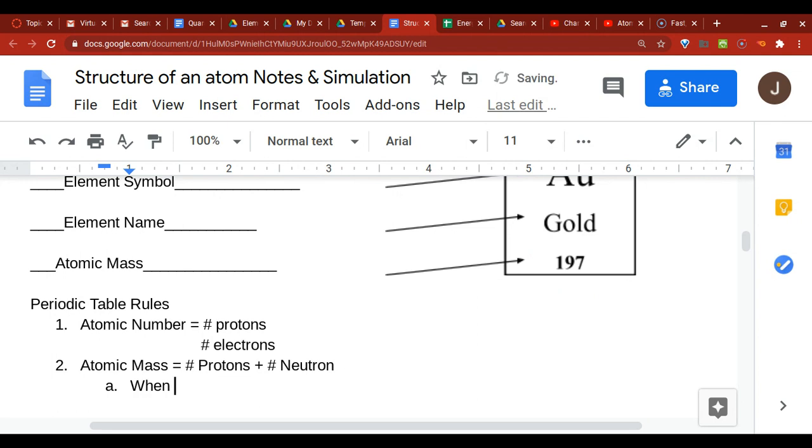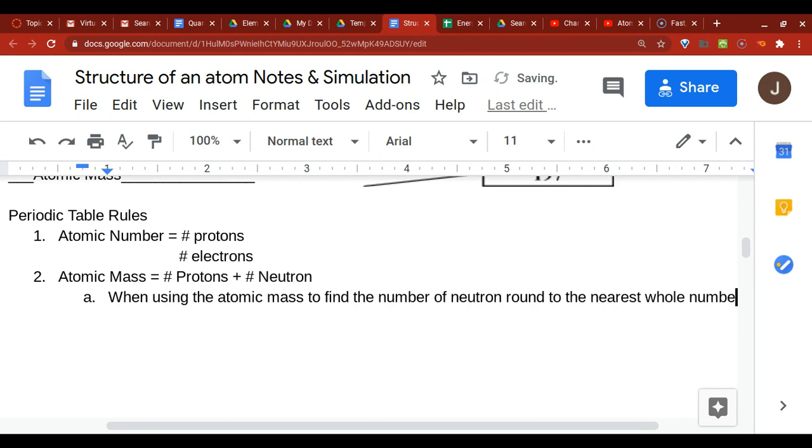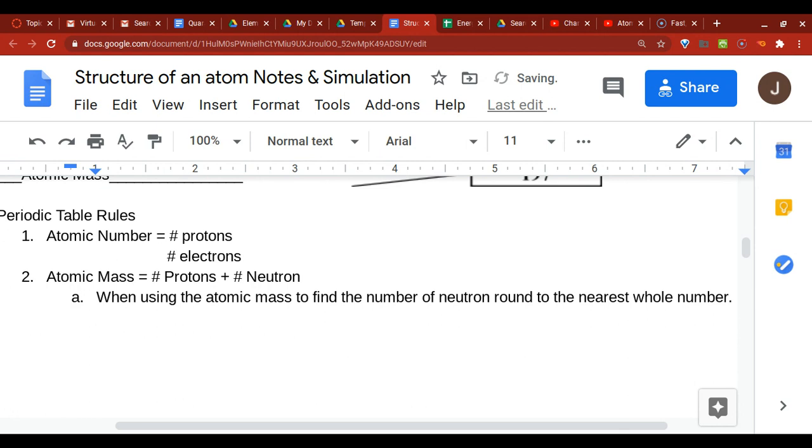So what you would need to do when using the atomic mass is to find the number of neutrons, round to the nearest whole number. And that would help you be able to have what you need to get the average number of neutrons to draw, since you can't draw part of a neutron. So those are some rules that will definitely help later on this week when you're decoding the periodic table.